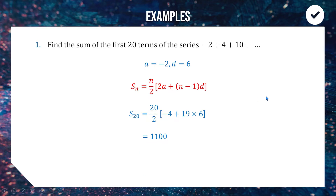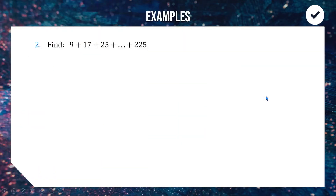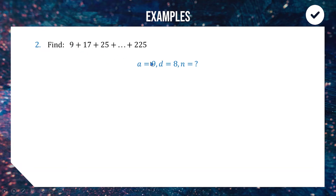For the next one, we are summing an arithmetic series from 9 up to 225. This question is more challenging because to find the sum we need to know how many terms we're adding. We have a starting term of 9 and a common difference of 8, but we don't know how many terms get us up to 225.